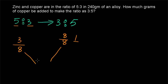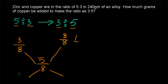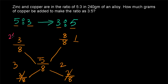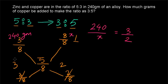The final ratio is 3 is to 5, so the quantity of copper in the final mixture is 5 by 8. The difference between 8 by 8 and 5 by 8 is 3 by 8, and the difference between 5 by 8 and 3 by 8 is 2 by 8. So the required ratio is 3 is to 2. With 240 grams as the alloy, we set 240 divided by x equal to 3 by 2, giving x equal to 160 grams.